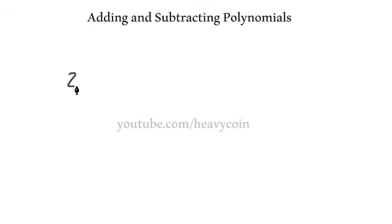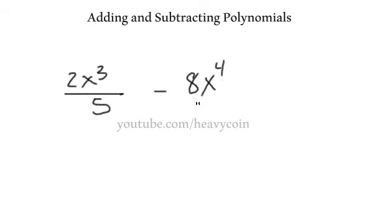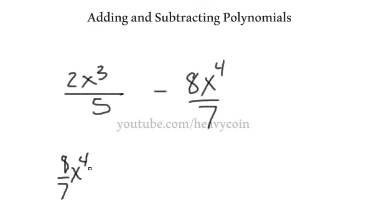So if we had 2x cubed over 5 minus 8x to the 4th over 7 and wanted to write this in standard form, because the term with x to the 4th has the highest degree, we write that first: negative 8 sevenths x to the 4th plus 2x cubed over 5. That's standard form, and most of the time we do write our work in standard form.